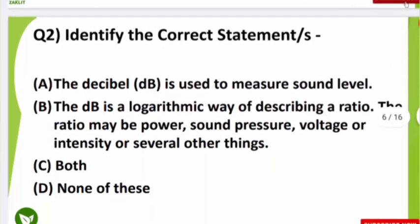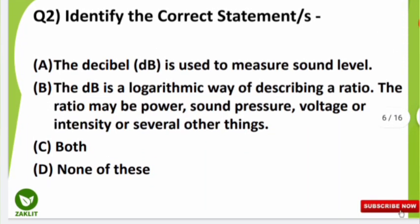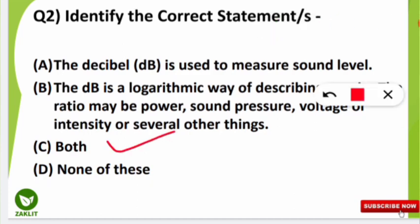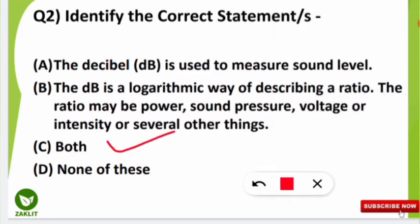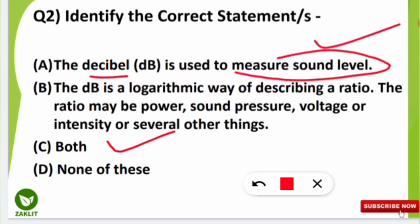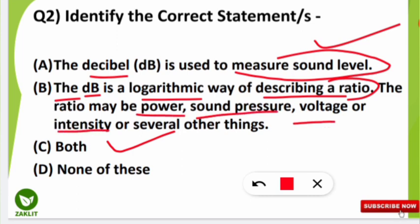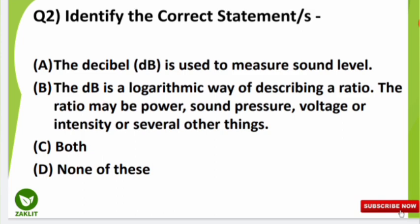The next question asked to identify the correct statements, and here both statements were correct, so option C is correct. The first statement: the decibel (dB) is used to measure sound level. The second statement: dB is a logarithmic way of describing a ratio. The ratio may be power, sound pressure, voltage, or intensity. These are important points to write in your notes.